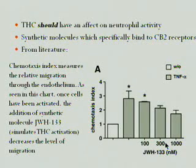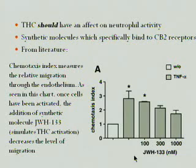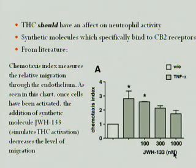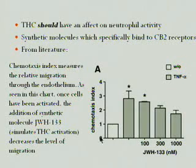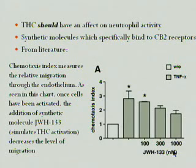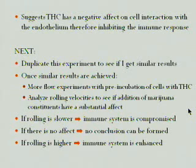Synthetic molecules are used to test the specific activity of CB2 receptors found on neutrophils — specifically JWH-133, which is the chemical I use. It has the same components as THC but it doesn't bind to the CB1 receptors in the brain. This chart shows relative migration level through the endothelium wall, and as you can see, with increasing amounts of JWH-133 the migration decreases. That suggests that THC should have a negative effect on cell interaction with the endothelium, meaning it should inhibit the immune system.